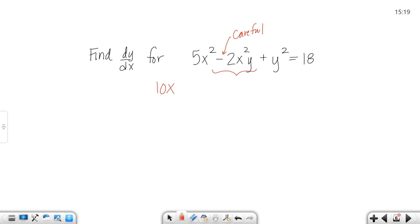Let's skip the bad part. The derivative of y squared would be 2y dy/dx. And the derivative of 18, of course, is 0.